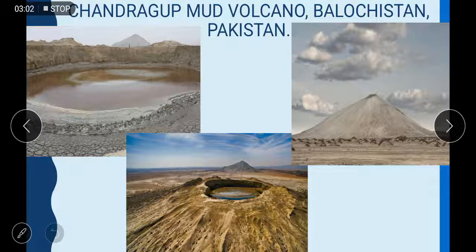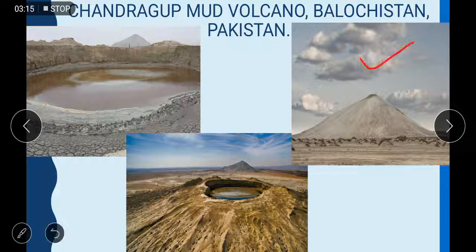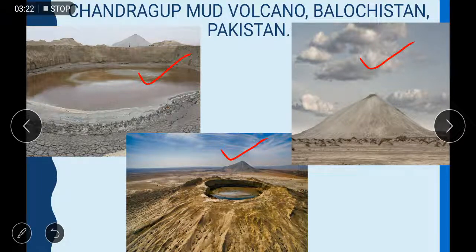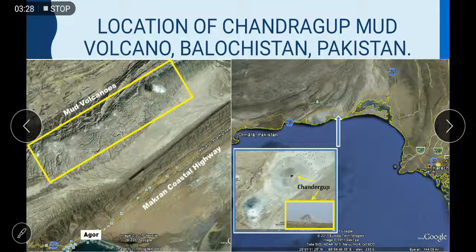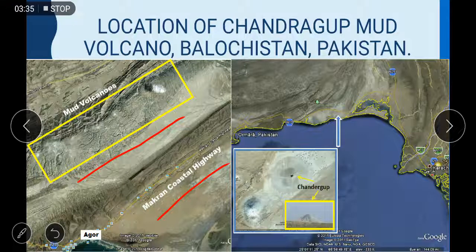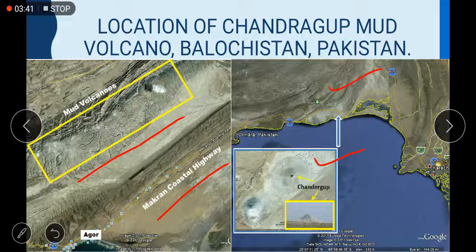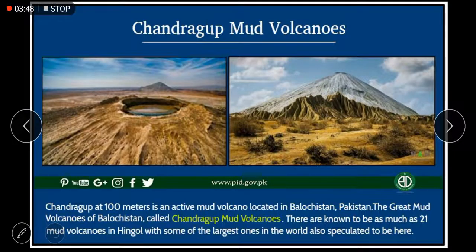In Pakistan, Balochistan has the largest mud volcanoes. Here you can see the picture of Chandragup mud volcano. There is a series of mud volcanoes in Balochistan near the Makran coast — it is also a very famous tourist area. Near the Makran Coastal Highway you can see this series of mud volcanoes, which are very famous. Here is a picture of the area near Ormara and the Makran Coastal Highway.